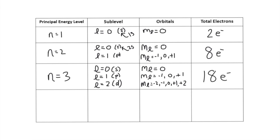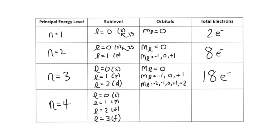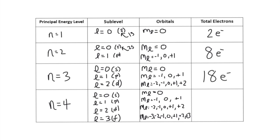The fourth energy level, N equals 4, has four sublevels: S, P, D, and F — giving 16 orbitals. M sub L for S is 0; for P, negative 1, 0, and positive 1; for D, negative 2, negative 1, 0, positive 1, and positive 2; and for F, negative 3, negative 2, negative 1, 0, positive 1, positive 2, and positive 3. The fourth energy level can hold 32 electrons.